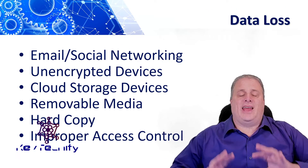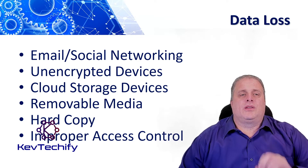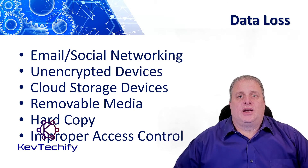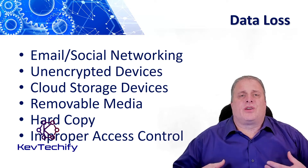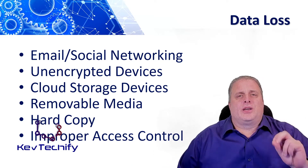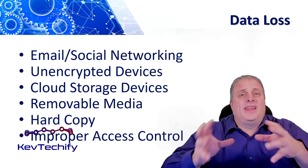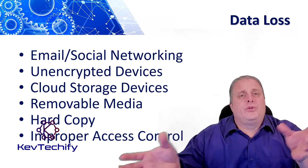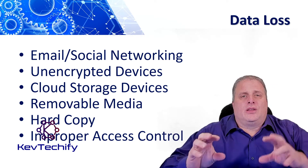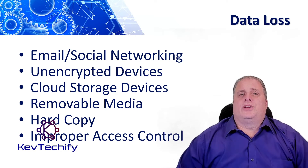Data loss can happen at many points on your network. Email and social networking is the most common vector for data loss, and this includes instant messaging software and social media sites. If somebody intercepts an email or an instant message, that information could be used for accessing your network, passwords, or other sensitive data. Most of these are not sent encrypted — they're sent in clear text.